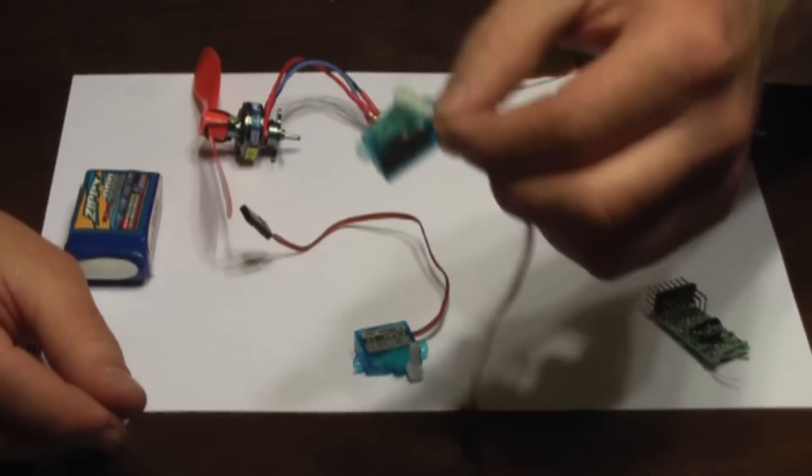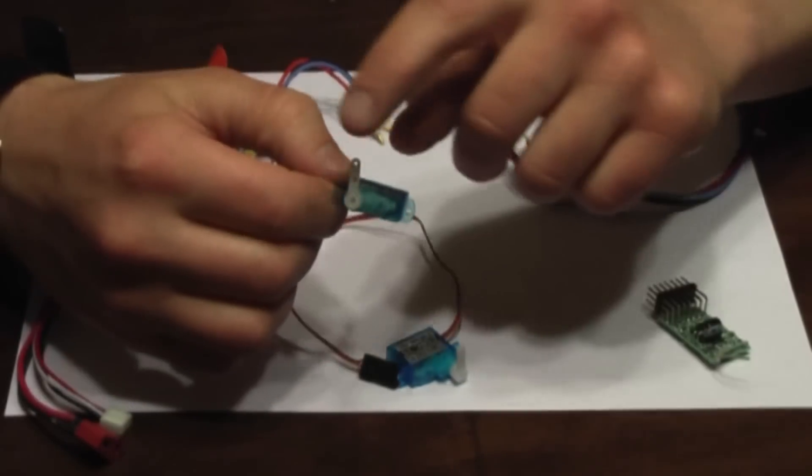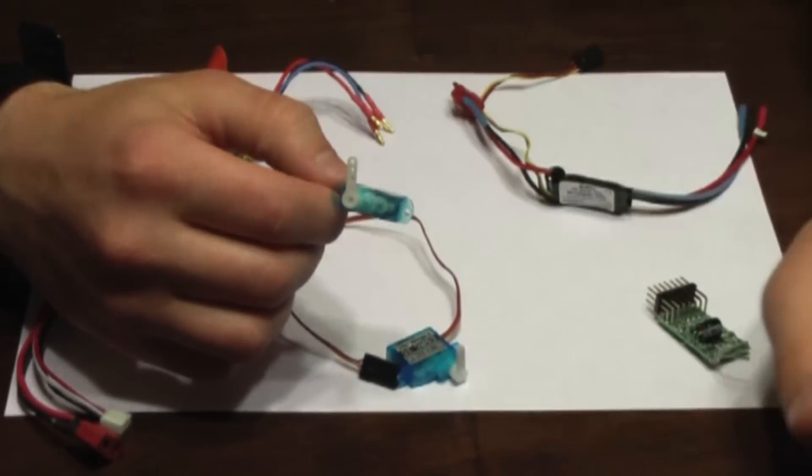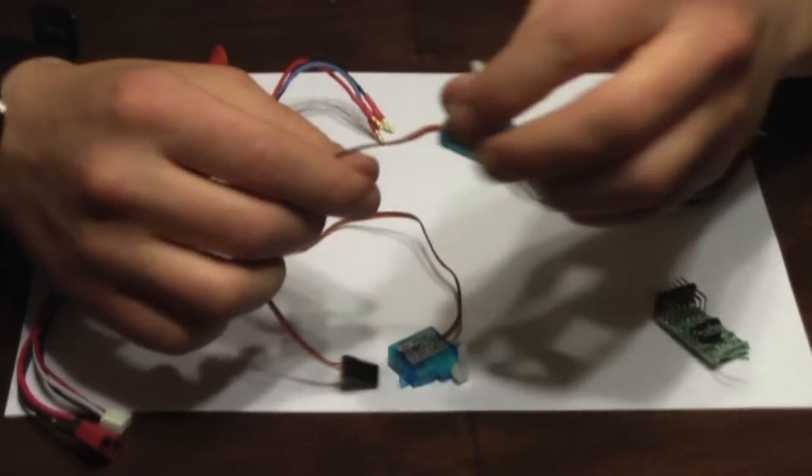This is a servo motor. It's just a little geared motor with an arm attached to it. And this is what you're going to attach to your control surfaces to make them actuate and control the plane.